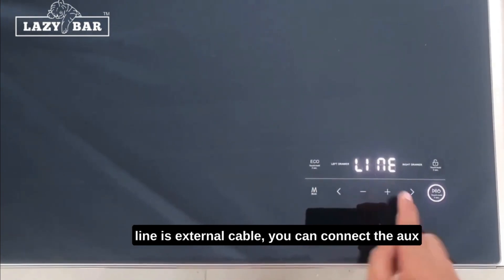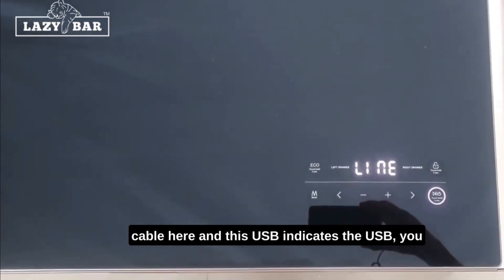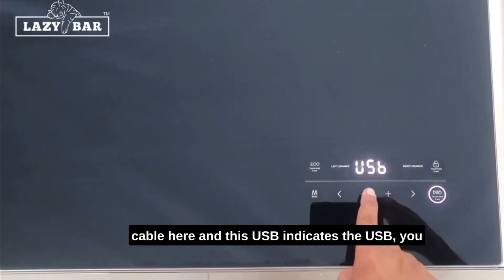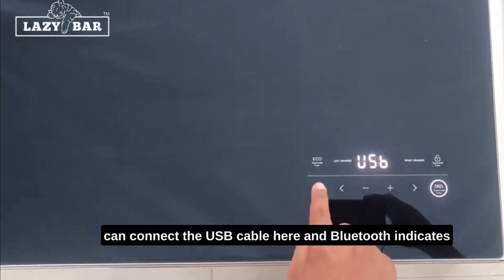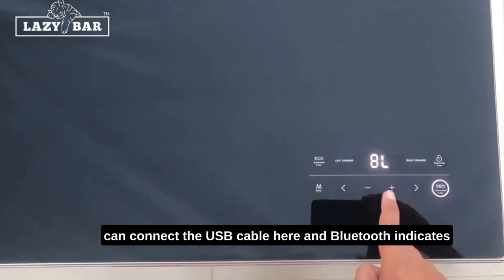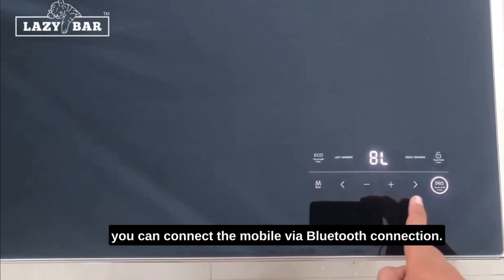This line is external cable. You can connect the AUX cable here. And this USB indicates the USB. You can connect the USB cable here. And Bluetooth indicates you can connect the mobile via Bluetooth connection.